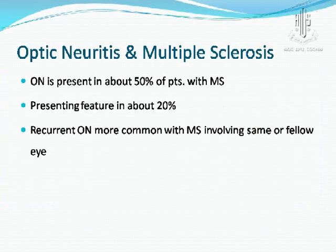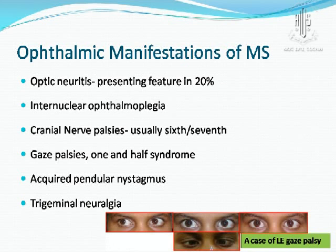Optic neuritis is closely related to multiple sclerosis. In about 50% of cases of optic neuritis, patients have MS, and it can be the presenting feature in about 20% of MS cases. Recurrent optic neuritis is more common with MS, involving the same or the fellow eye. Ophthalmic manifestations of MS include optic neuritis, internuclear ophthalmoplegia, cranial nerve palsies, gaze palsies, pendular nystagmus, and trigeminal neuralgia.